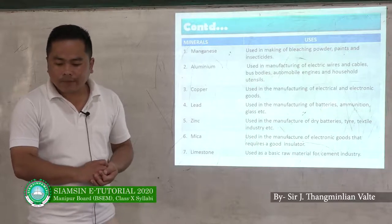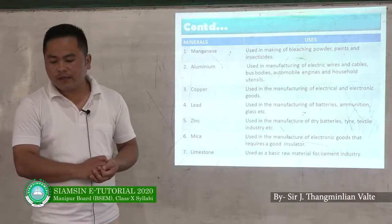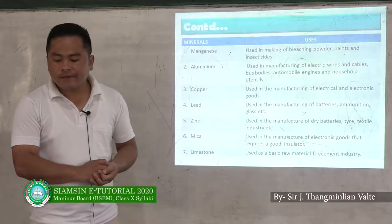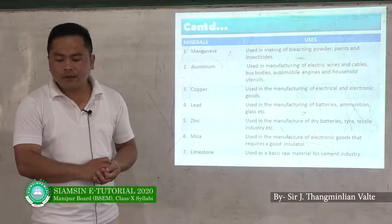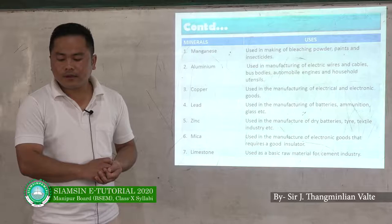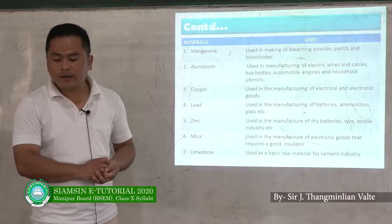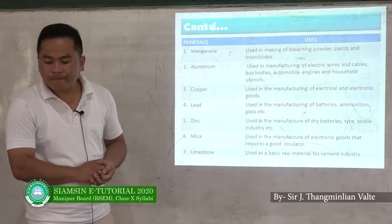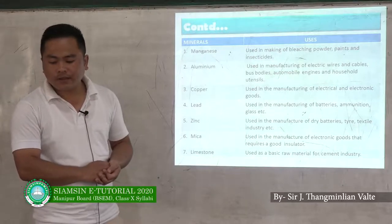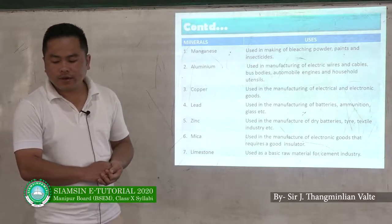Aluminium is used in the manufacturing of electric wires and cables, bus bodies, automobile engines, and household utensils. Copper is used in the manufacturing of electrical and electronic goods. Lead is used in the manufacturing of batteries, ammunition, and glass. Manganese is used in the manufacturing of dry batteries, tires, and in the textile industry. Mica is used in the manufacture of electronic goods that require a good insulator. Limestone is used as a basic raw material for the cement industry.